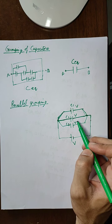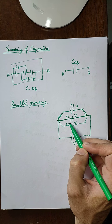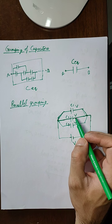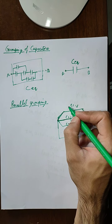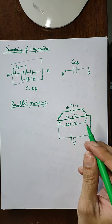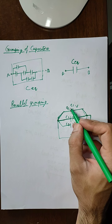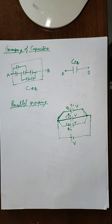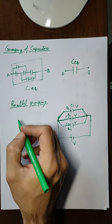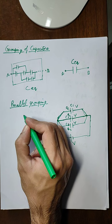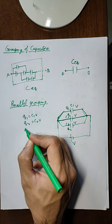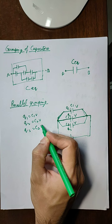Since the potential difference is the same but the capacitances C1, C2, and C3 are different, each capacitor will have a different charge deposited on it. Let us say capacitor C1 has charge Q1, C2 has Q2, and C3 has Q3. Then by the formula for capacitance: Q1 = C1·V, Q2 = C2·V, and Q3 = C3·V.